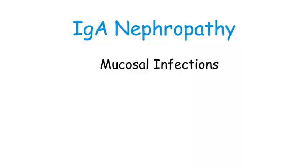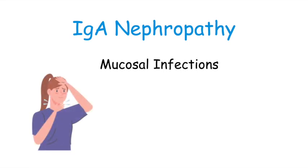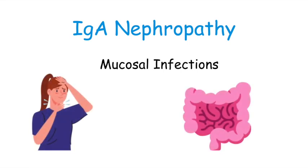IgA nephropathy is the most common cause of nephropathy in adults. It most commonly affects males in their 20s or 30s. It is often triggered by mucosal infections of the upper respiratory tract or the GI tract. Within five days of developing these mucosal infections, patients can present with hematuria, flank pain, or hypertension.